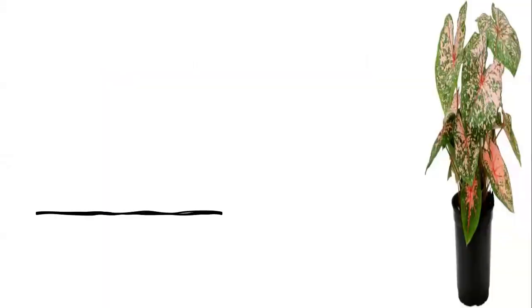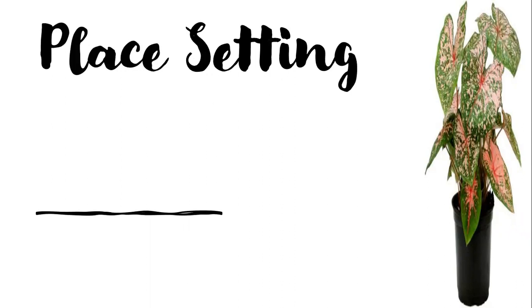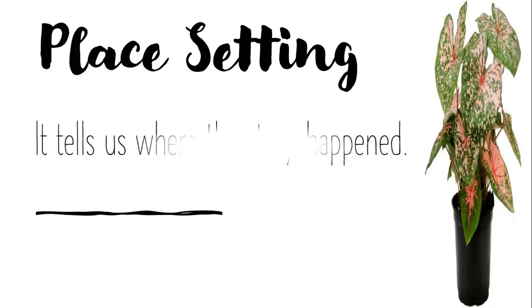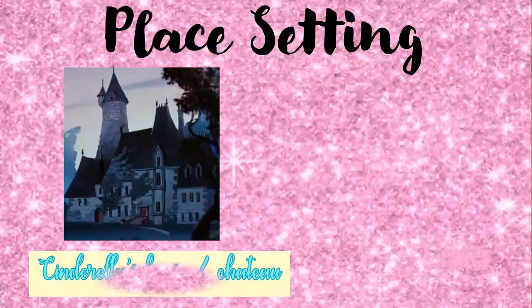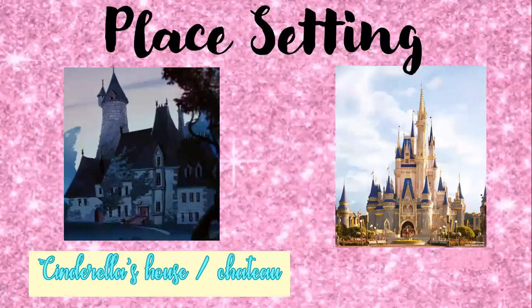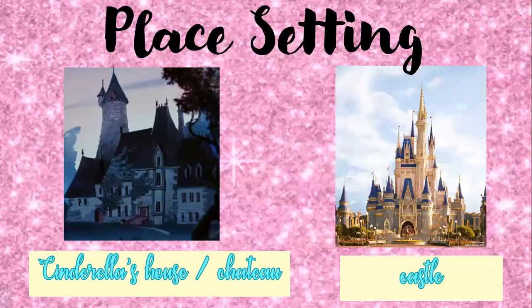We also have another type of setting which is the place setting. Place setting tells us where the story happened. So in the story Cinderella, we have two place settings: first, Cinderella's house or chateau, and the castle.